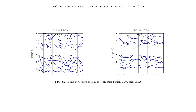This discrepancy highlights the importance of choosing a suitable exchange-correlation functional for accurate bandgap calculations. The calculations employ a plane wave basis set in the Projector Augmented Wave, PAW, method, with LDA and GGA exchange-correlation functionals describing electronic interactions. The Brillouin zone is sampled using a Monkhorst-Pack grid, and the total energy is converged to within 10⁻⁶ eV. Lattice parameters are optimized using a conjugate gradient algorithm. The results demonstrate the sensitivity of the bandgap energy to the choice of functional and lattice relaxation, with implications for the design of optoelectronic devices.